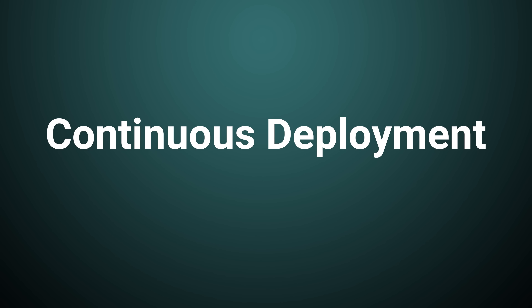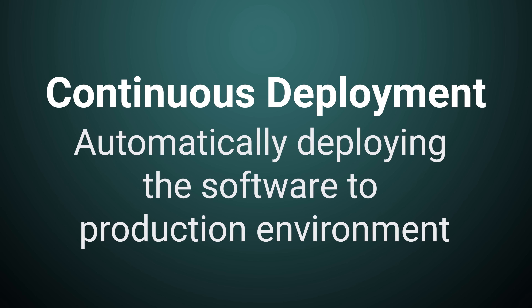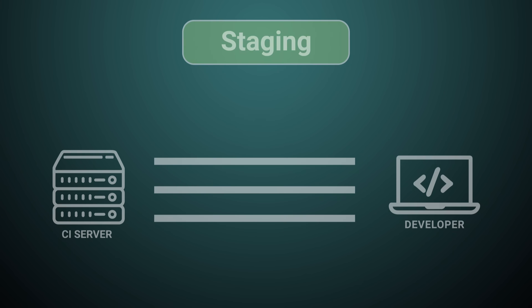Finally, there's continuous deployment. Continuous deployment is the practice of automatically deploying the software to the production environment once it passes all the tests in the staging environment. Continuous deployment is similar to continuous delivery, but the software is automatically deployed to the production environment without any human intervention. Continuous deployment involves using automation tools to build the software and run a series of tests to ensure that it's ready for deployment.